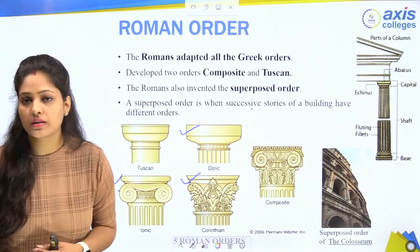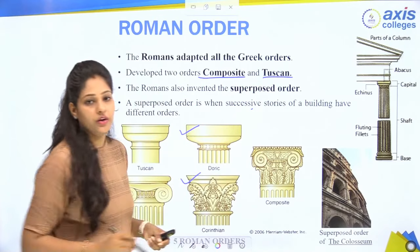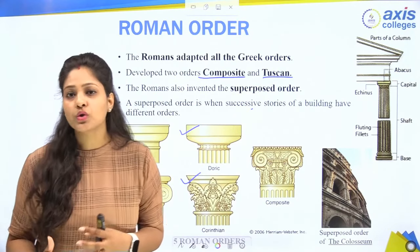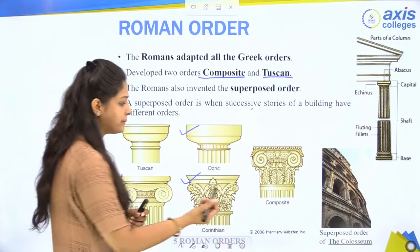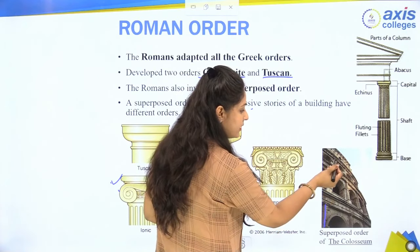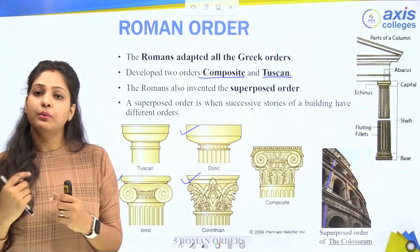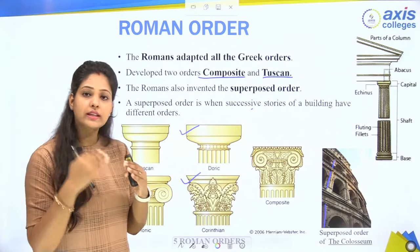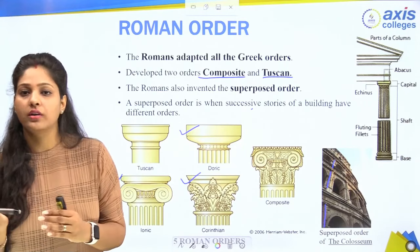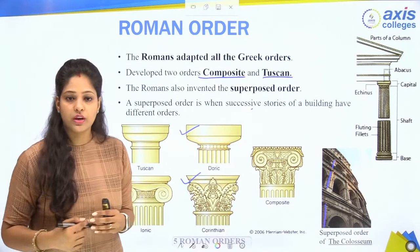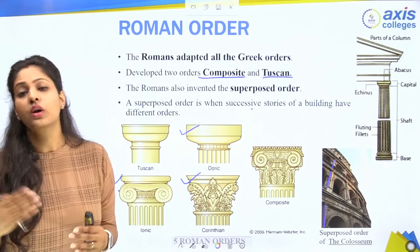Two new orders developed: the Composite order and the Tuscan order. Romans also developed the superimposed order. In superimposed order, one column order is placed on top of another — for example, Doric on the ground floor, Ionic on the first floor, and Corinthian on the second floor — superimposing the orders over one another.